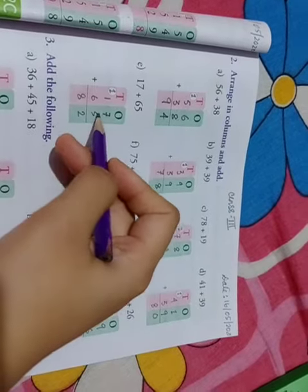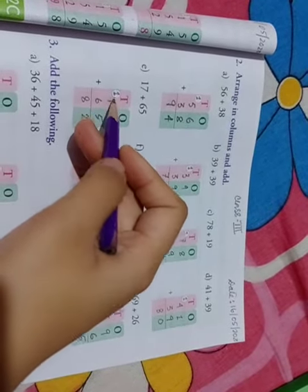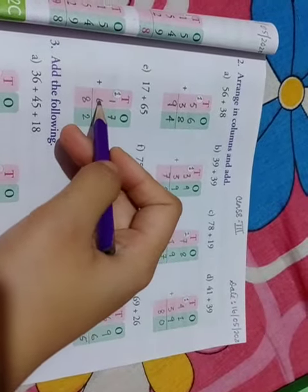Next, 17 plus 65. 7 plus 5 is 12, write 2 and 1 is carried over. 1 plus 1 is 2, 2 plus 6 is 8.